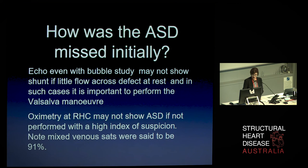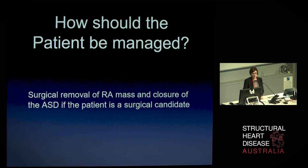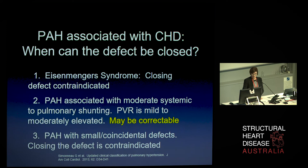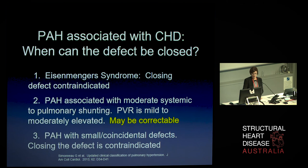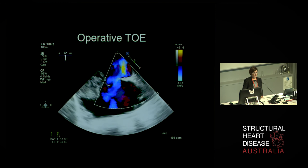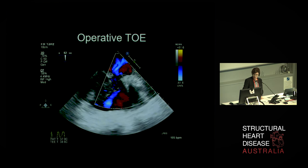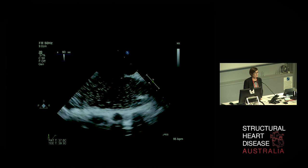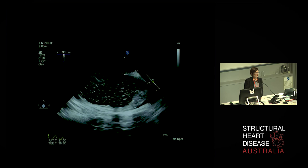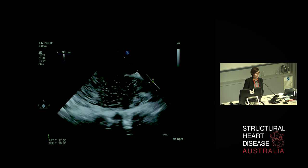How should this patient be managed? Ideally she should have surgical removal of the mass and the ASD should be closed, provided she's a surgical candidate and it's felt to be safe. When can an ASD be closed? If it's a bystander defect in a patient with idiopathic PAH, it shouldn't be closed. If the patient has Eisenmenger's syndrome — where pressures have increased to the point the shunt has reversed or is bidirectional — it also shouldn't be closed. But there is a group in the middle with moderate pulmonary shunting and only mildly-to-moderately elevated PVR who may be correctable. Intraoperative TOE showed the mass and the defect with bidirectional flow, and a bubble study — effectively provided by propofol — showed a negative contrast effect with no bubbles crossing, illustrating how the shunt could have been missed on the original bubble study.